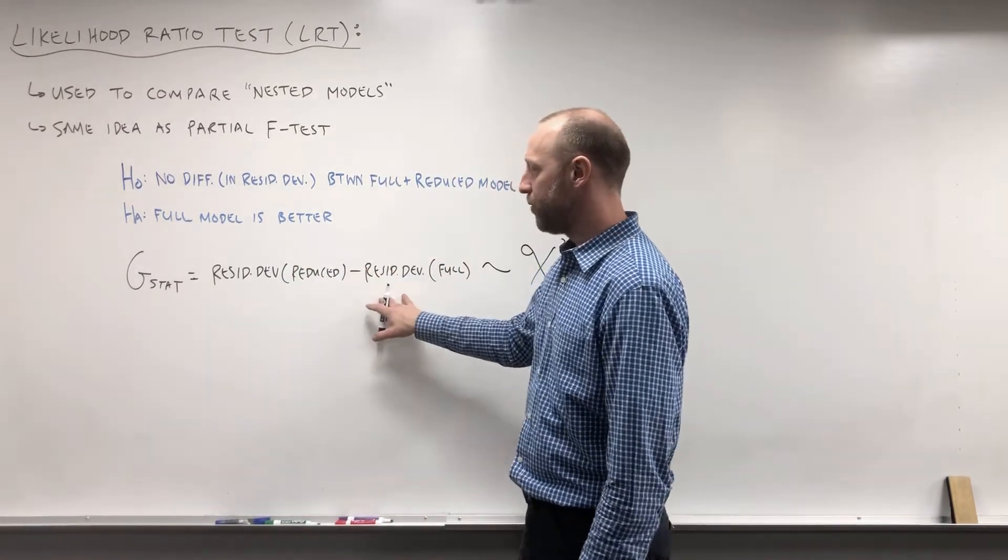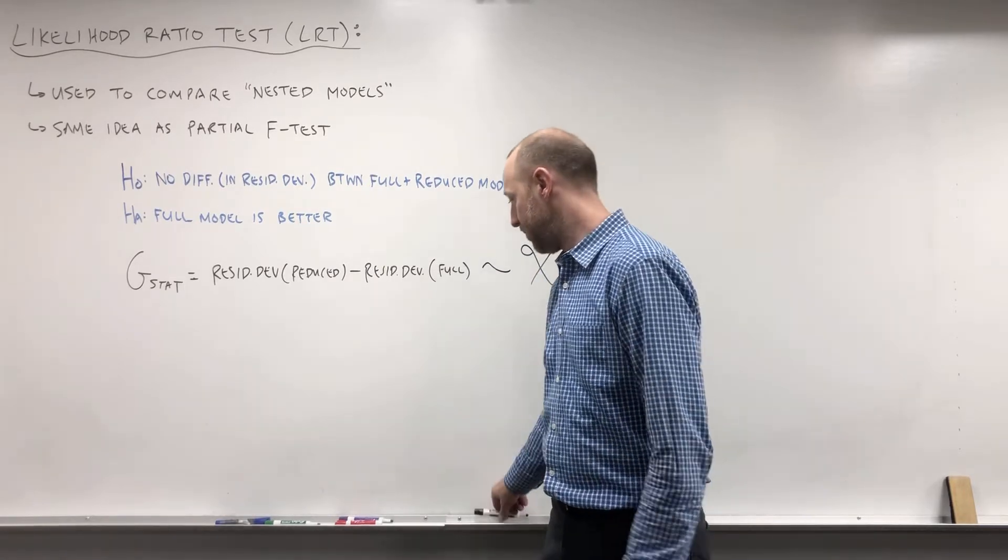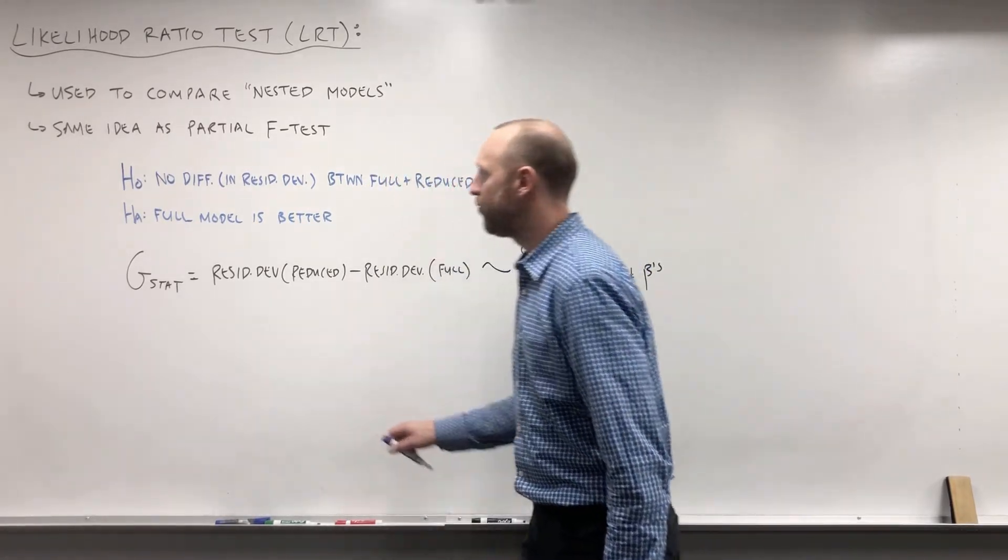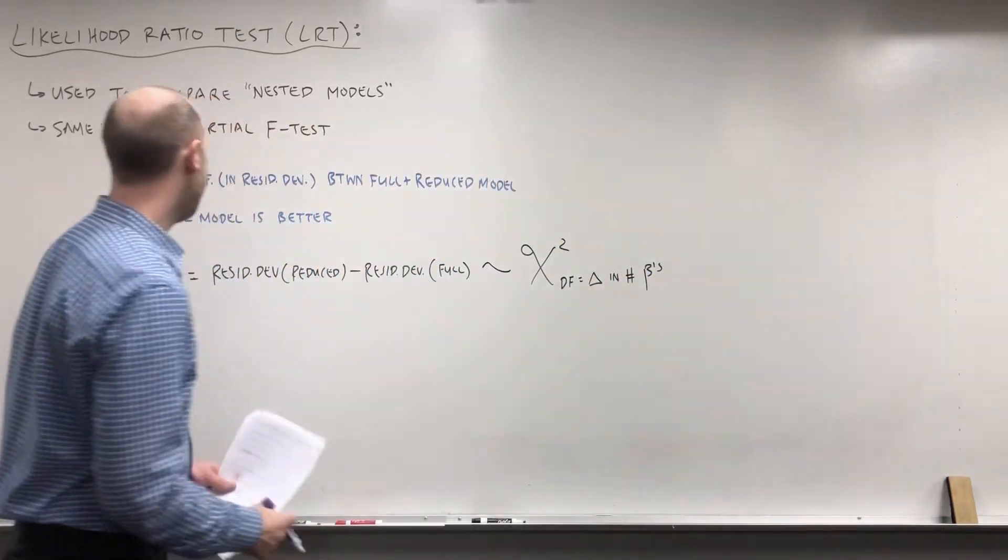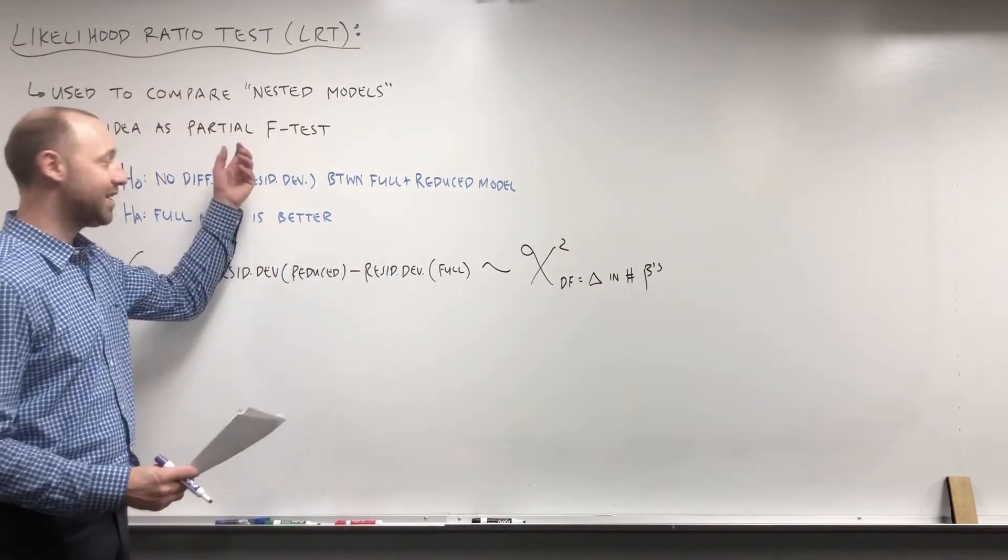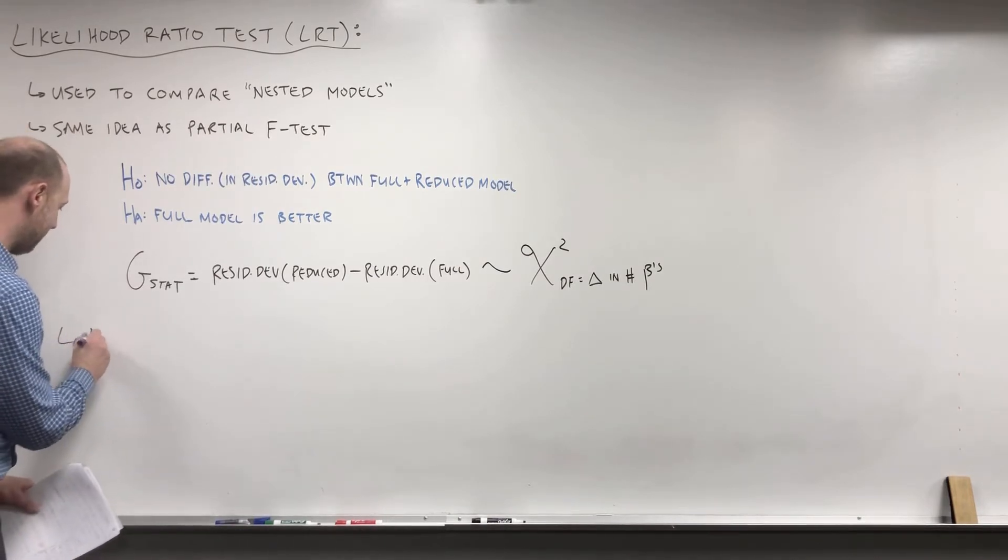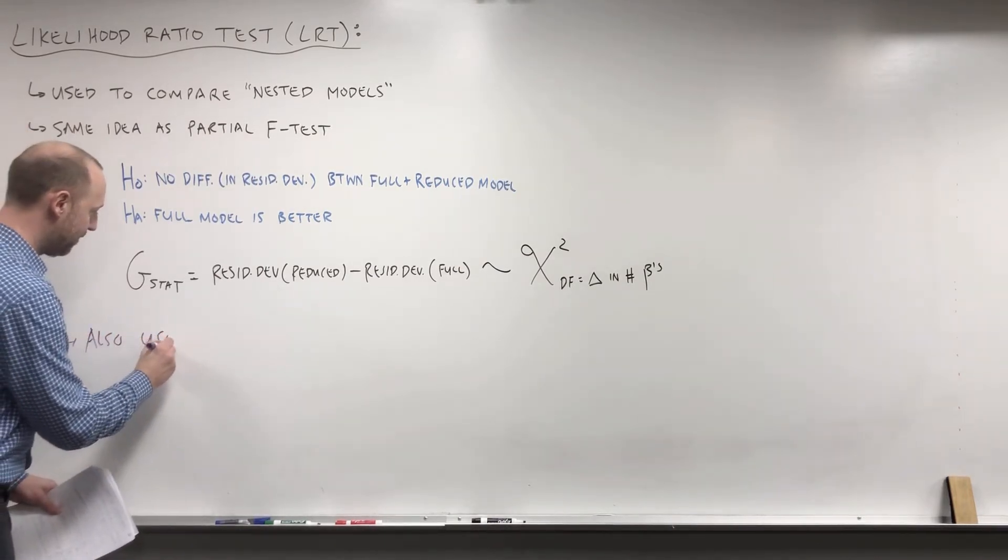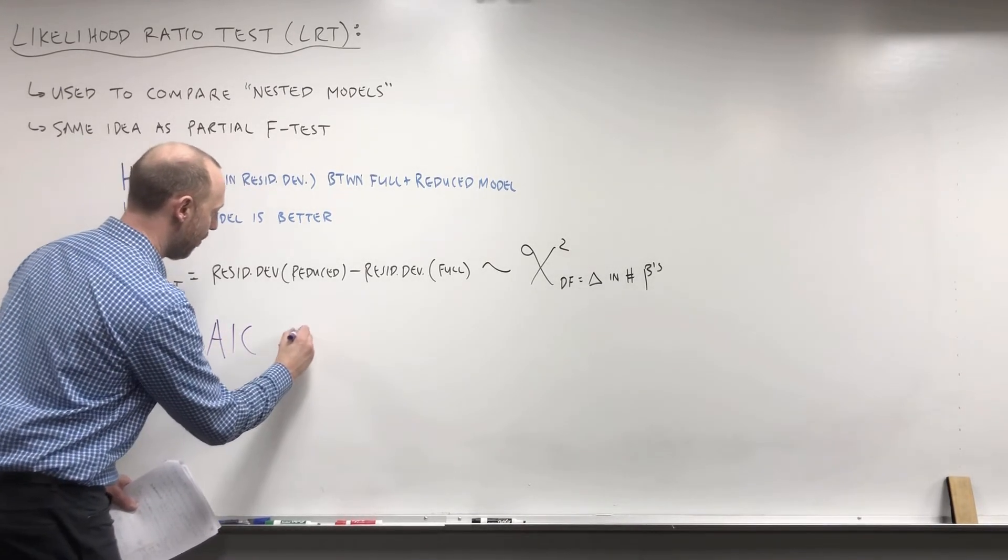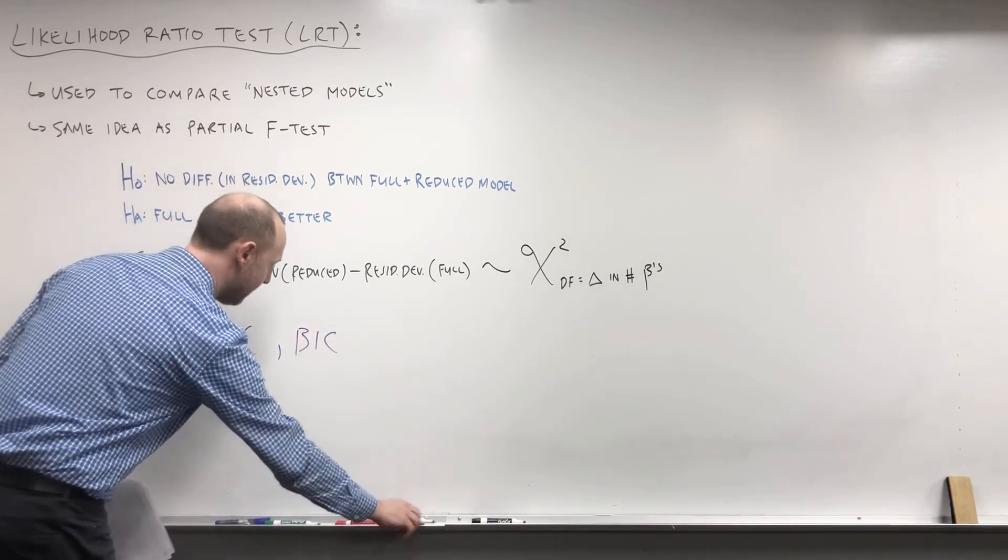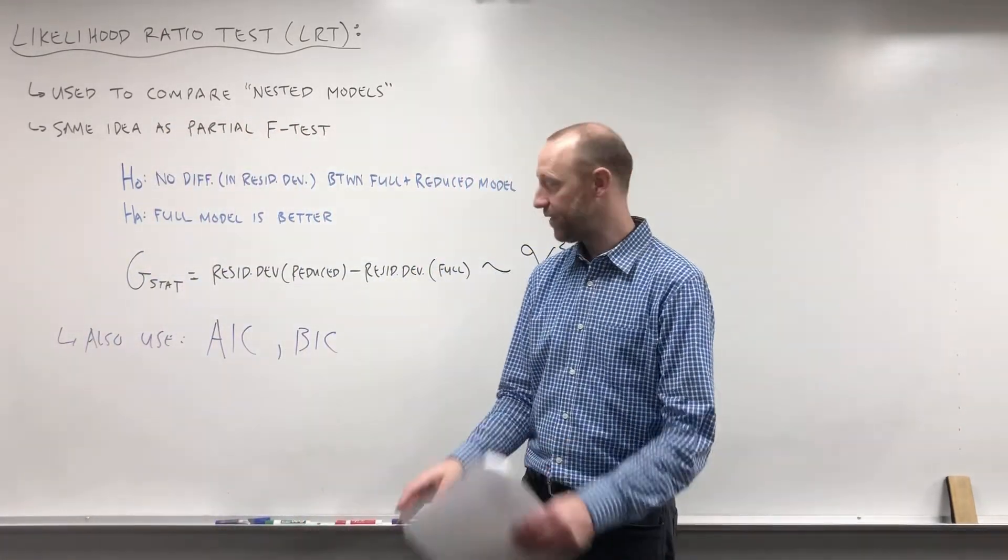You're not going to work with this by hand. You're going to be implementing the test in R, and we'll look at doing that shortly. Before we do, I want to mention other ways we can compare models that are nested or non-nested. We can also use things we looked at like AIC or BIC. These are other criteria for comparing models that are nested or non-nested.